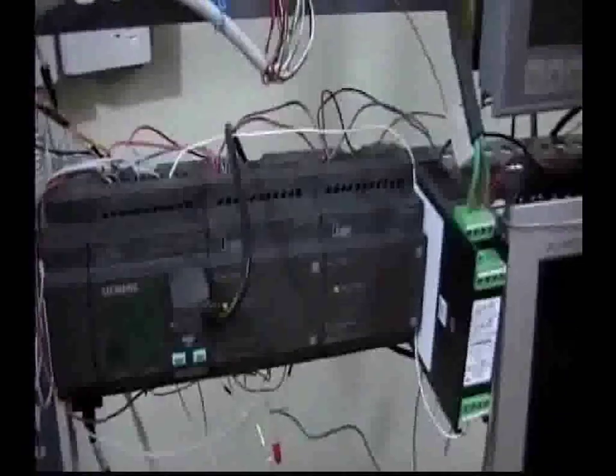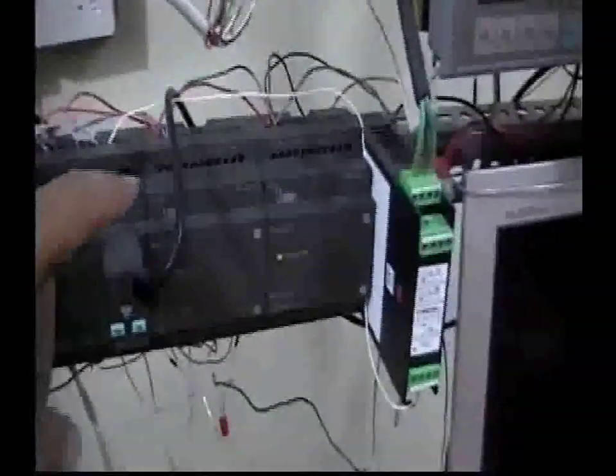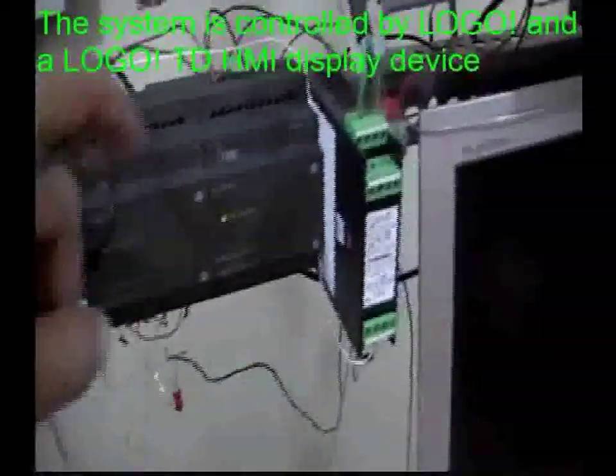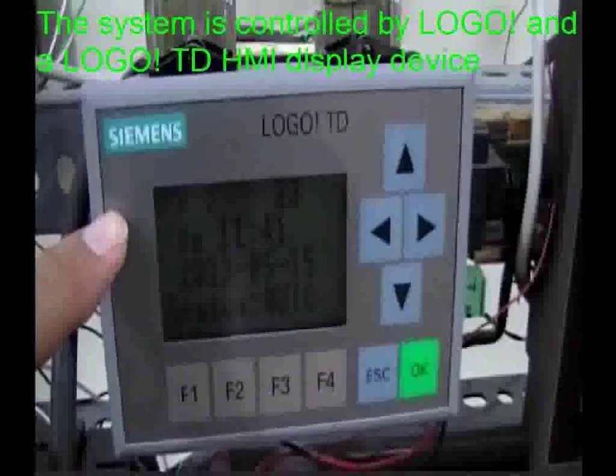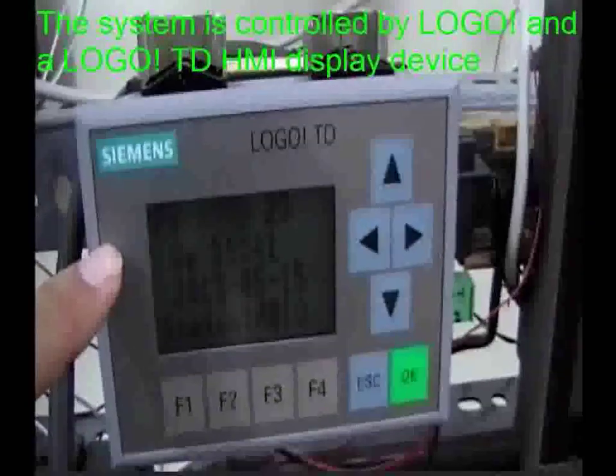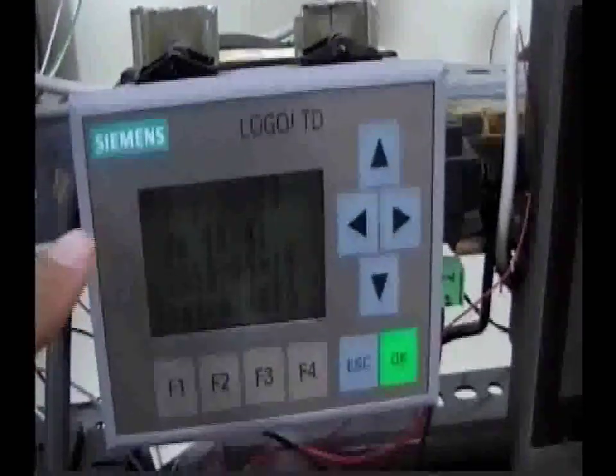As you see, this system consists of a Logo, an expansion module, a transmitter, and also Logo TD which is displaying the PV and SV temperatures.